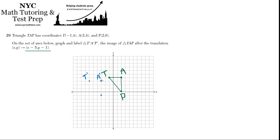Once you do one point, you really know them all because it's a pure translation. So the other two points have to be relative to the first point. A has to be 3 units to the right of T, and P has to be below A. So this is P prime.